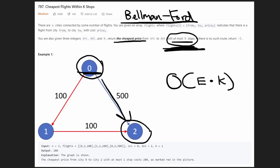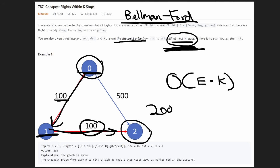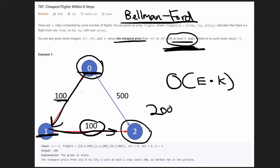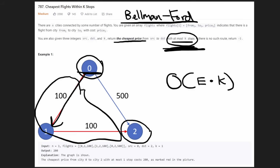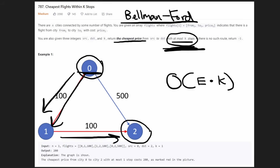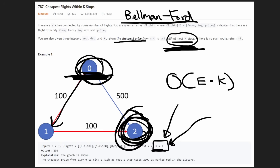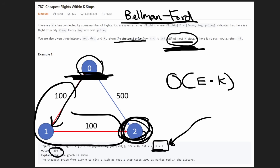We have a direct edge from 0 to 2 with cost 500. But there's a second path: going to city 1 costs 100, then from 1 to 2 is another 100, totaling 200. That's cheaper. And it does fit the criteria — we were given K equals 1, meaning at most one stop between source and destination. City 1 is the single intermediate city, so the answer is 200.